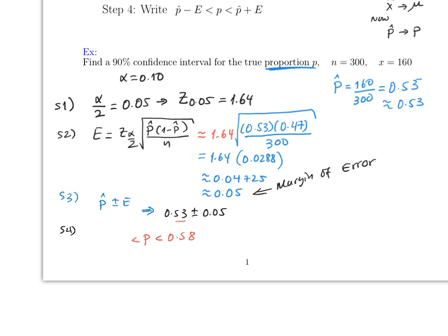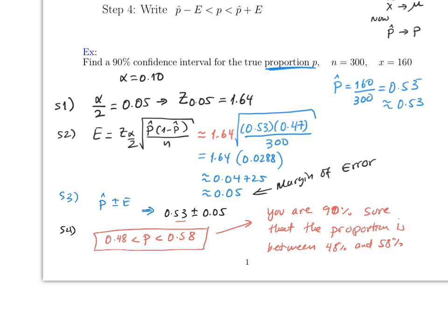And then by the solution, this will be 0.58, 53 plus 5 is 0.58, and 53 minus 0.5 is 0.48. So this will be 0.48 to 0.58. So therefore the explanation is you are 90 percent sure the proportion is between 0.48 and 0.58, and that's it.